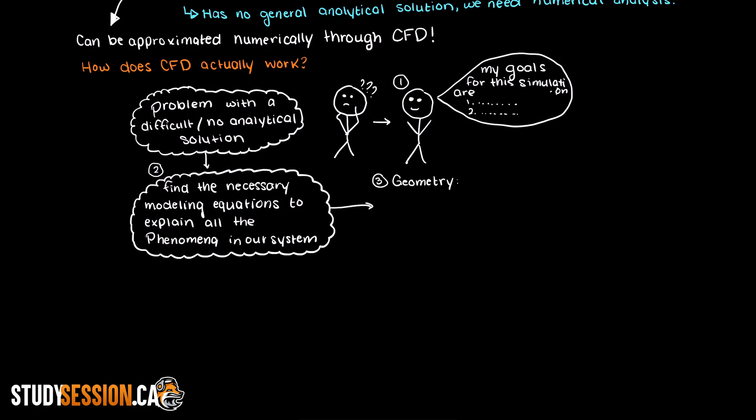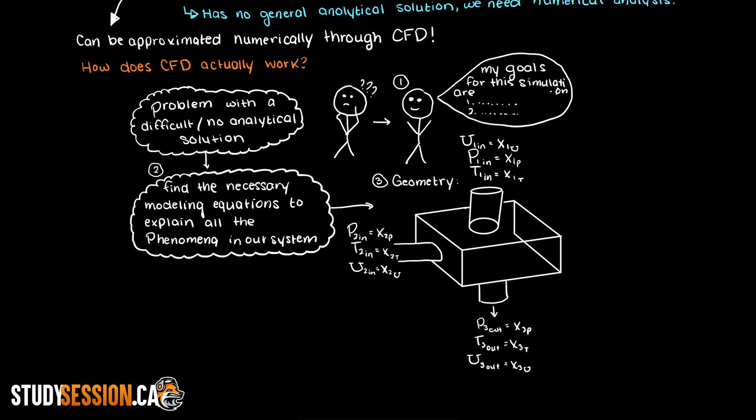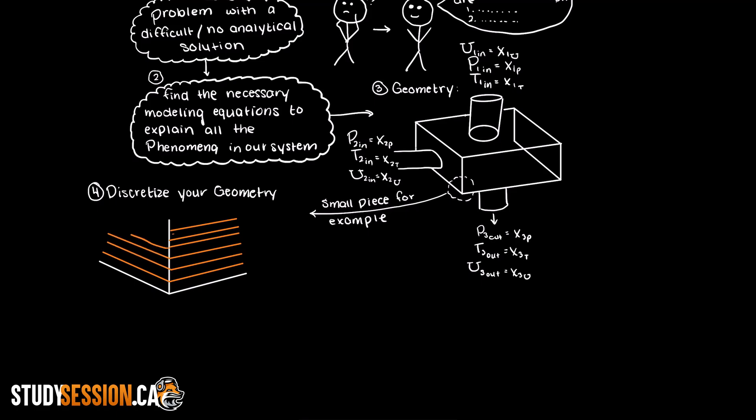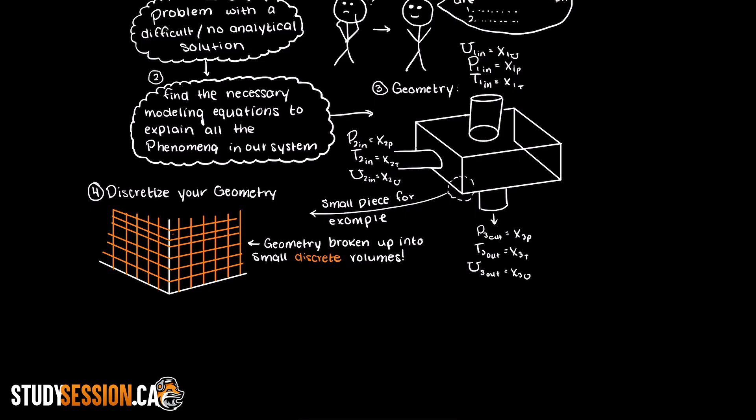Then we move to creating a geometry for whatever the system is that we want to study. We then break that geometry down into tiny volumes. This step is called discretizing your geometry, which just means that you are breaking your geometry into discrete or specific amounts of smaller volumes. As a whole, these newly formed volumes, also known as cells, in our geometry are called a mesh, which represents the idea that all of our tiny volumes are connected and interact with their neighboring volumes.